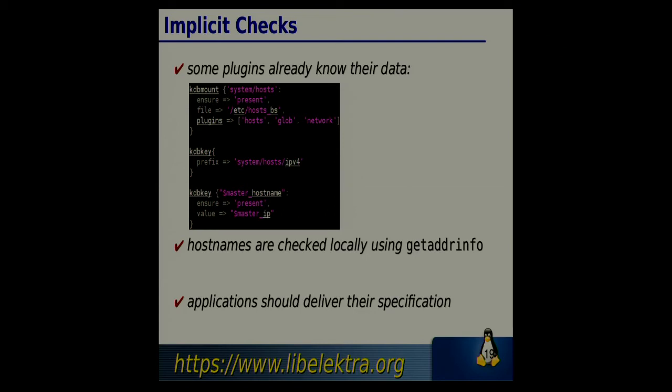It's tiresome to manually encode configuration constraints. We also have a lot of implicit checks - some plugins already know how their data looks. For example, from how a hosts file looks, we automatically know which parts are IPv4 addresses, IPv6 addresses, and how canonical hostnames look. If you use the host plugin in the Cardibee Mount, the host plugin automatically recommends global network settings. We get a complete check that we only write a valid hosts file. If a master IP address is invalid, we get a validation on the node where getaddrinfo will be invoked and it checks for this operating system if the IP address can be successfully resolved.